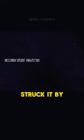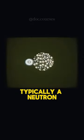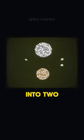Let's take a big atom, struck it by a tiny particle, typically a neutron. This atom splits into two.